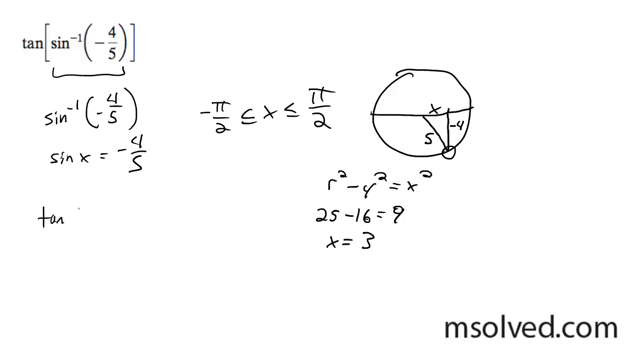So now we want the tangent of the value we had, the radian value. I don't know what it exactly is without a calculator, but it doesn't matter. And then finally, I know that my value for the tangent of that is simply going to be y over x, which is going to be negative.